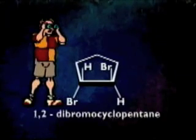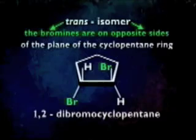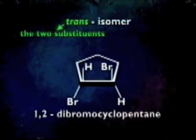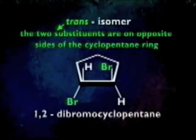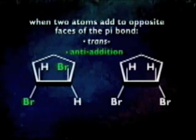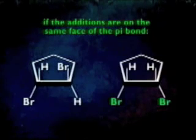What do these molecules look like in space? 1,2-dibromocyclopentane is always found as a trans isomer, meaning the bromines are on opposite sides of the plane of the cyclopentane ring. Trans means the two substituents are across from each other, while cis means they are on the same side. When two atoms add to opposite faces of the pi bond, they are trans to each other and have undergone anti-addition. If additions are on the same face of the pi bond so they are cis to one another, we say they have added with syn addition.